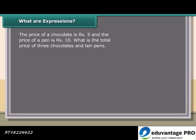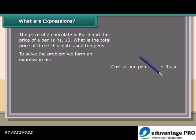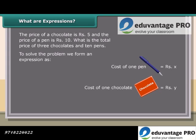What are expressions? The price of a chocolate is rupees 5 and the price of a pen is rupees 10. What is the total price of 3 chocolates and 10 pens? To solve this problem, we form an expression: cost of 1 pen is equal to rupees x, and cost of 1 chocolate is equal to rupees y.